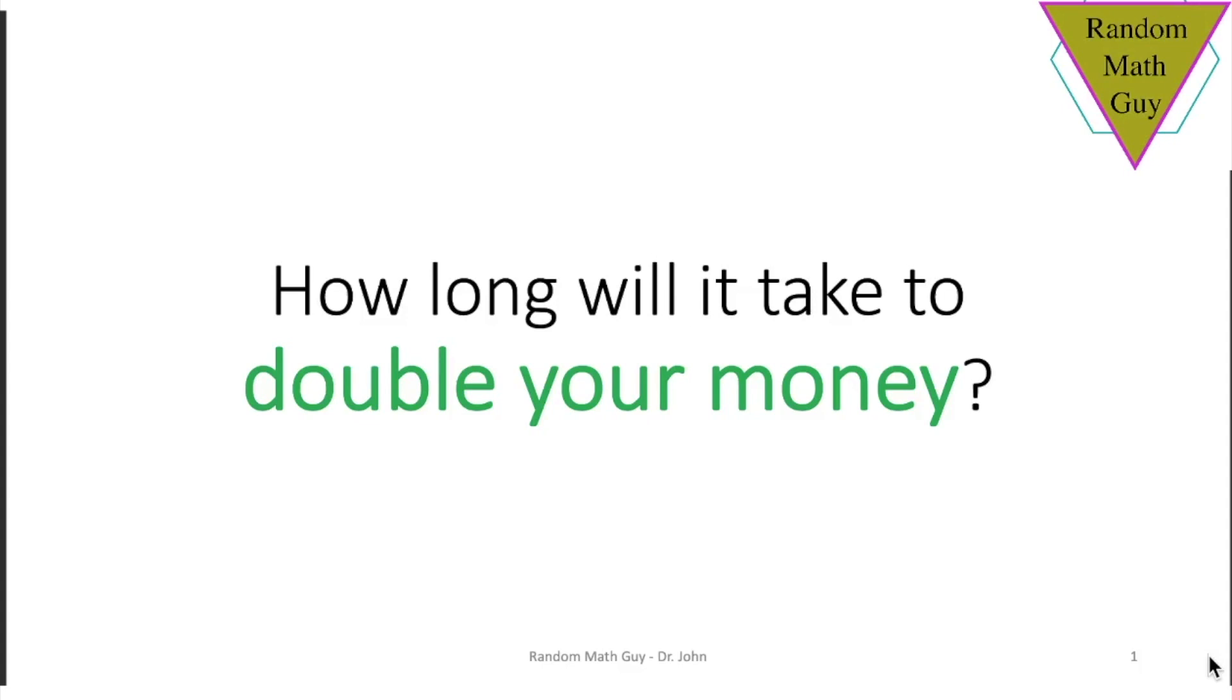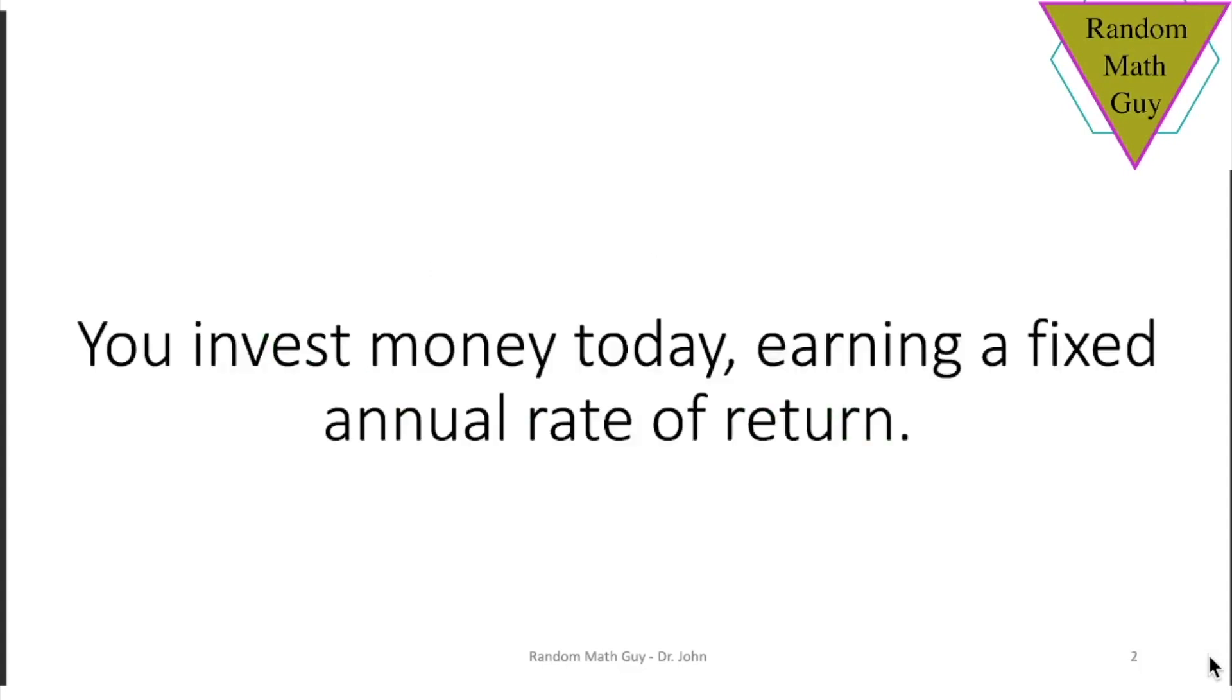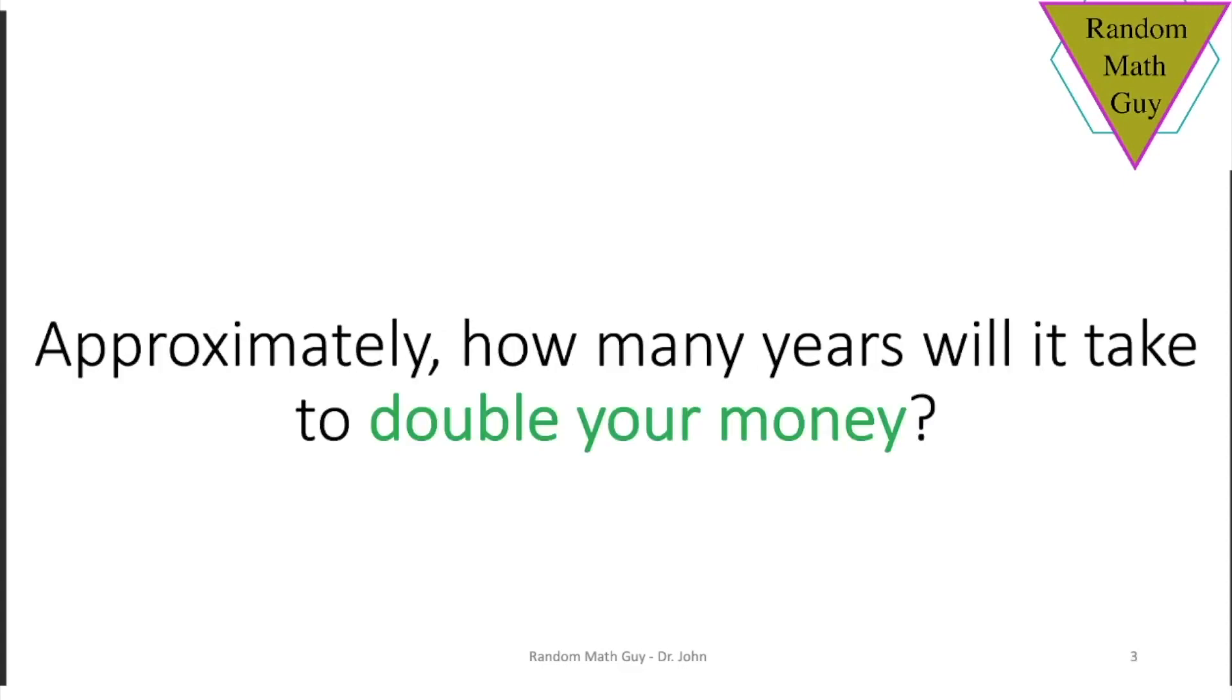Here's the breakdown. Let's say that you invest some money today and you know the fixed amount that you're going to get back every year as a rate of return, like 2% or 3% or whatever. How many years will it take to double your money? Let's assume that the interest is compounded annually for simplicity. The answer is as simple as taking 72 and dividing by that rate. That's it.